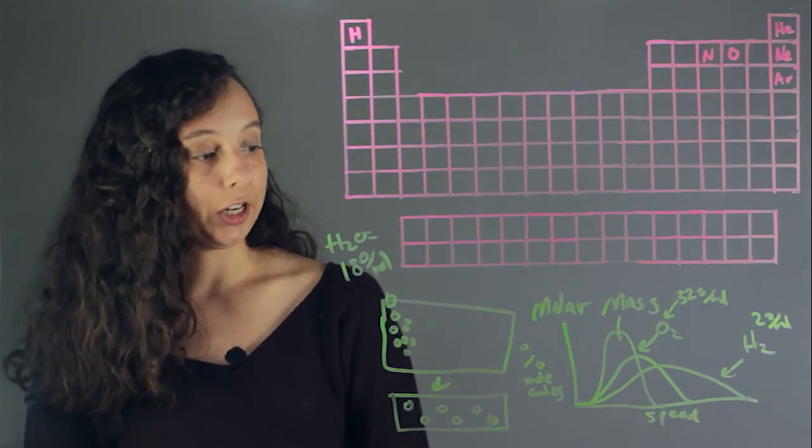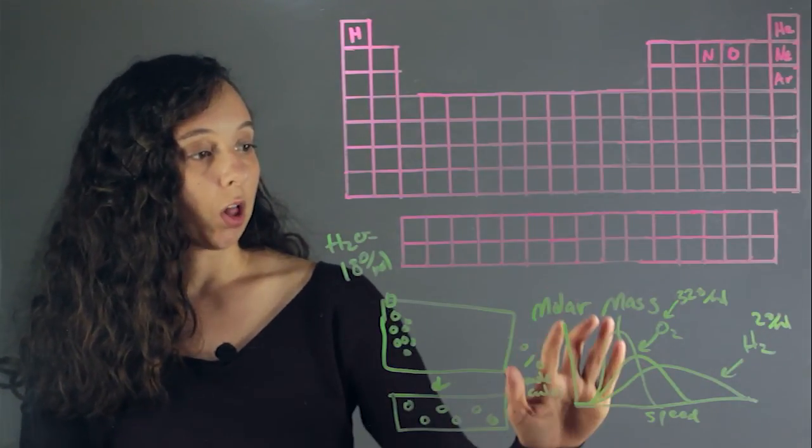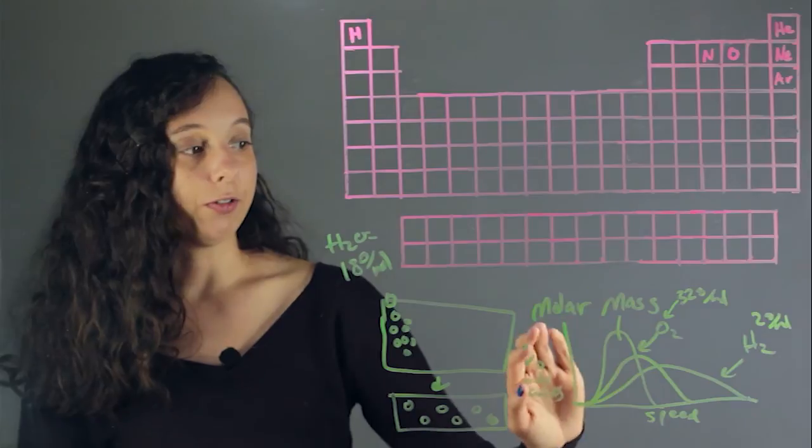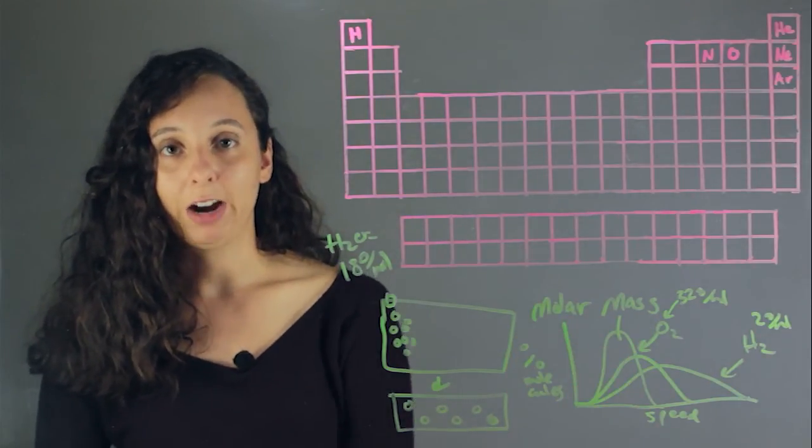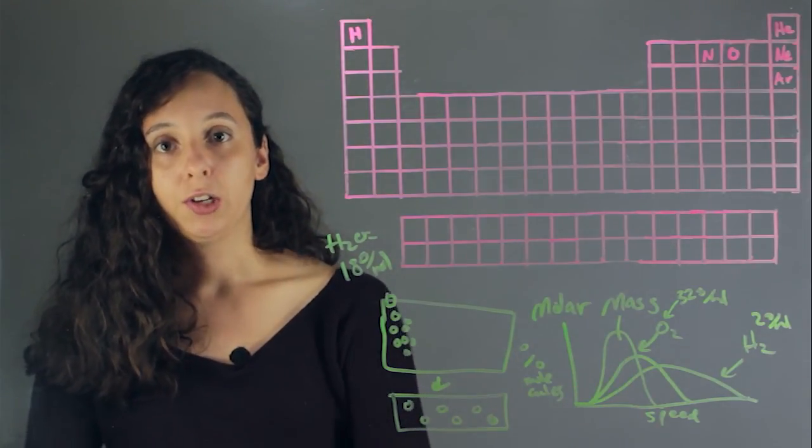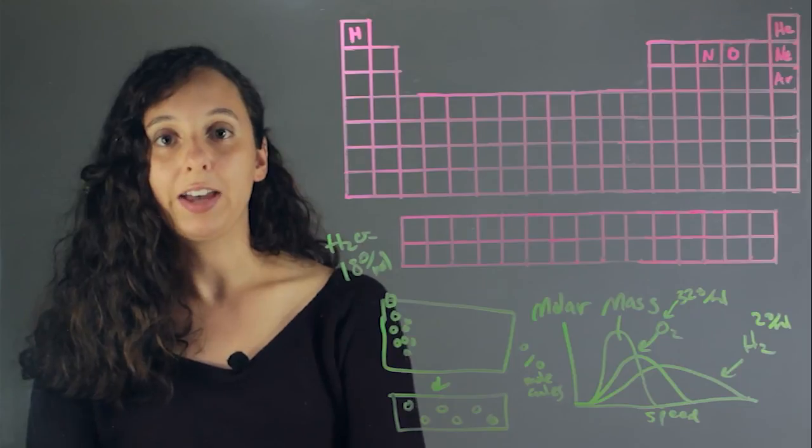So yeah, basically, in conclusion, if it's a smaller molar mass that weighs less, it will diffuse faster. I'm Robin Higgins, and this has been Slowest Diffusion Rate vs. Fastest Diffusion Rate.